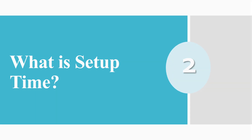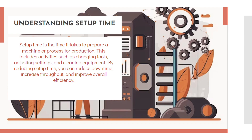Now let us understand what is setup time. Setup time is the time taken to prepare the machine or the process for production. Whenever we complete our first style of production and we are waiting for the second style, there will be a requirement for different machinery, different equipment, or we have to change the layout of the process. That time required is nothing but setup time. Setup time basically includes activities such as changing the tools in the machine, adjusting the settings in the machine, as well as cleaning and arranging the equipment.